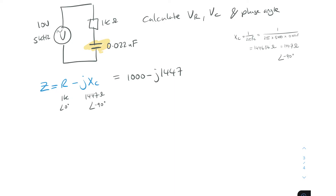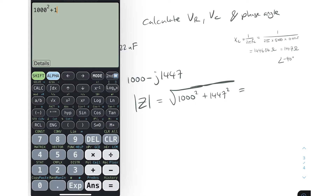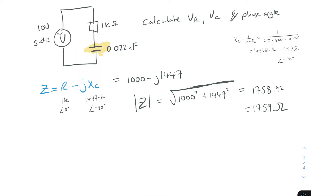Now we need to find the current, so let's convert this rectangular form impedance into polar form, which makes division easier. The magnitude of impedance equals the square root of R² + Xc², which is the square root of 1000² + 1447². Calculating that gives us 1758.92, so approximately 1759 ohms.